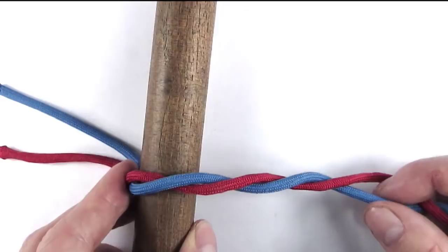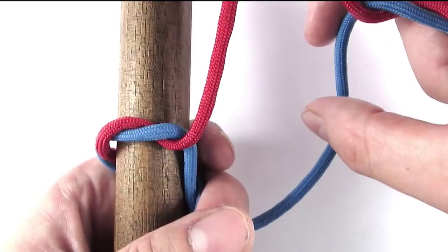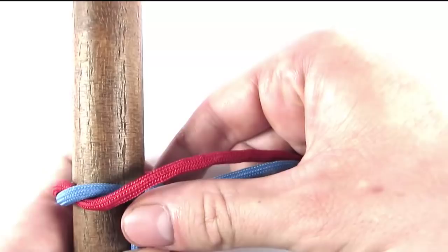I'm going to cross my cords by spreading apart my working ends as well as my standing ends. And I'm going to cross them like this. The standing ends are now at the bottom while the working ends are at the top.